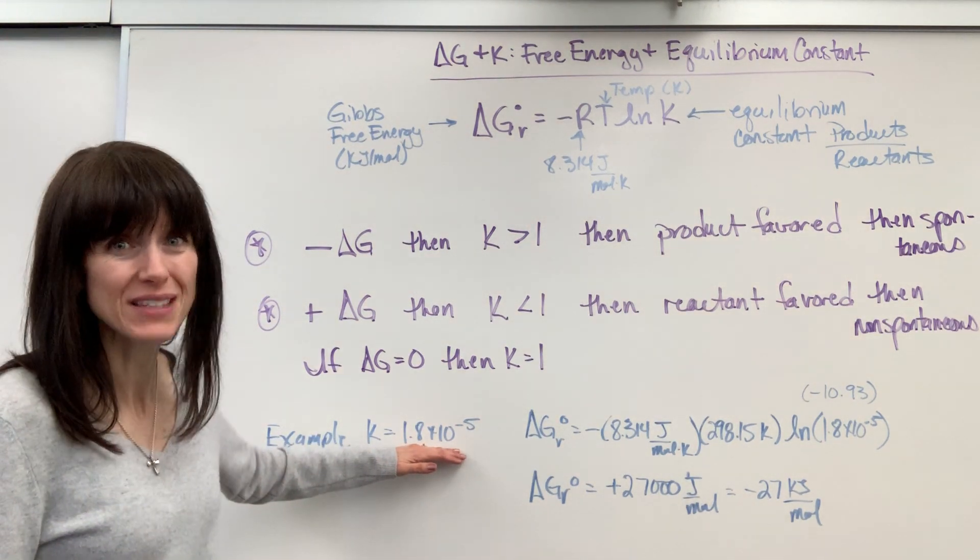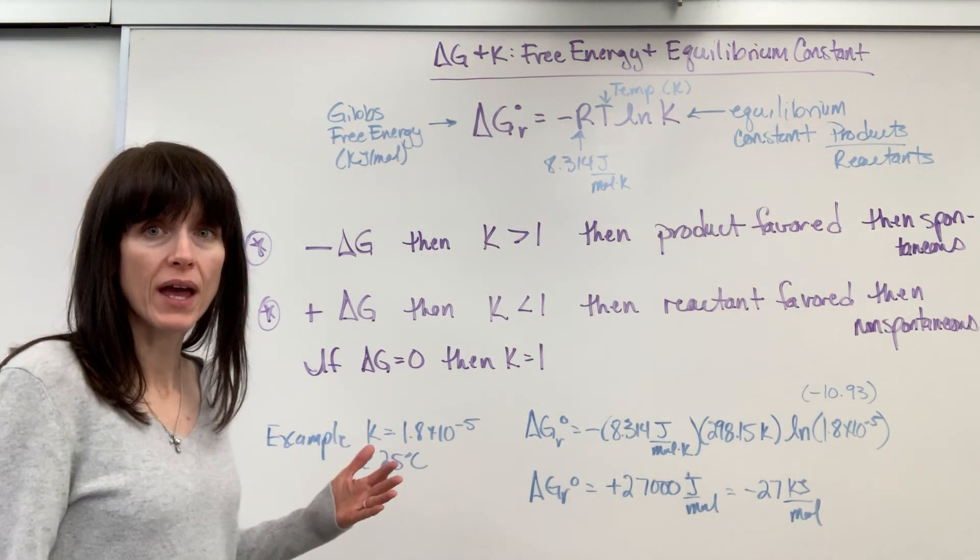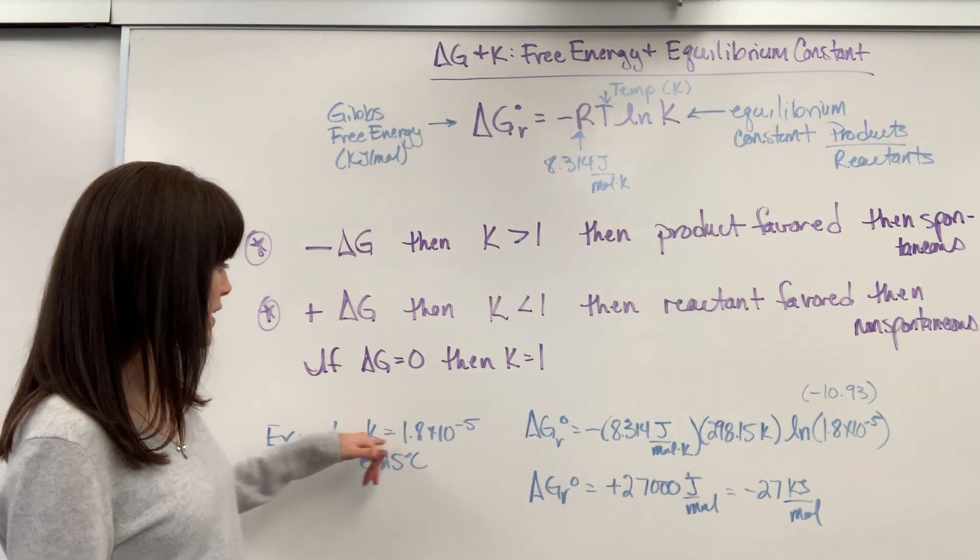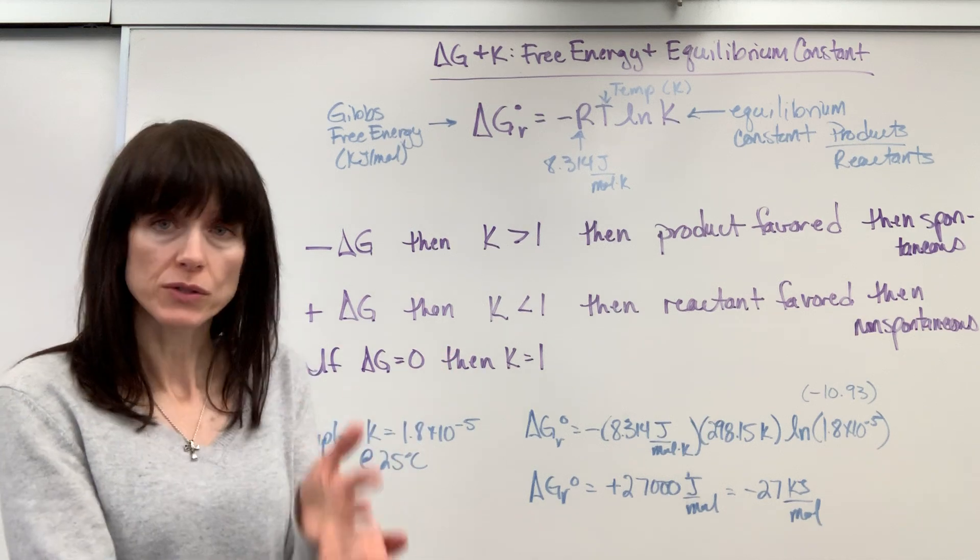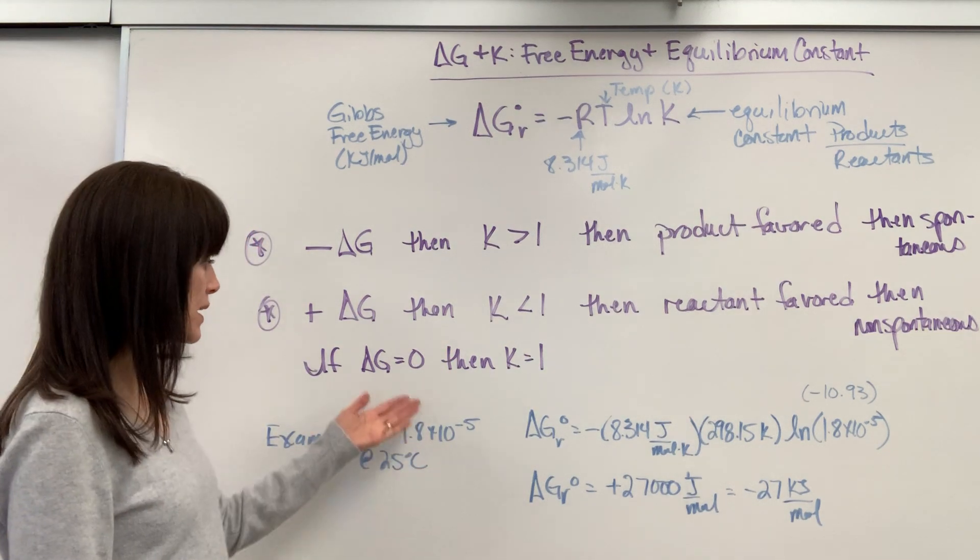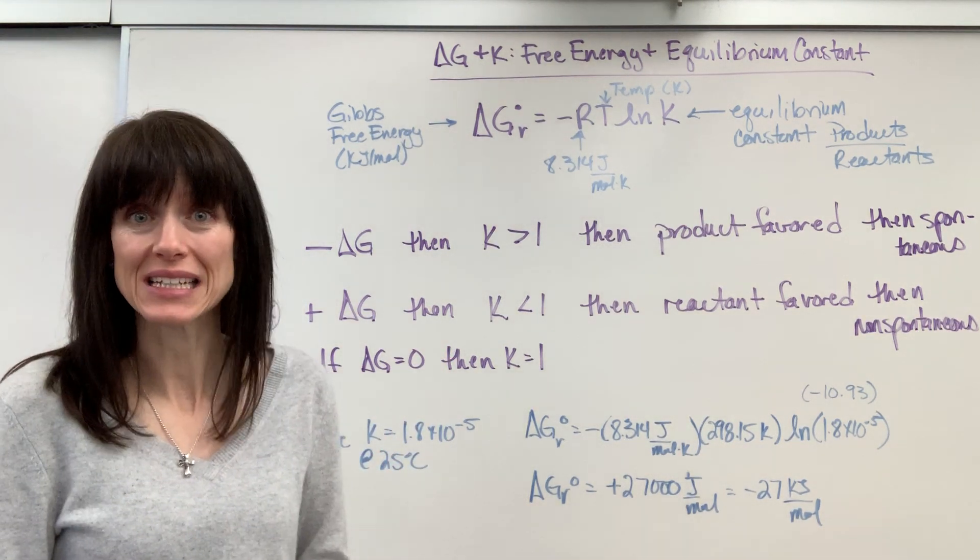less than 1, 10 to the minus 5, this is a small number. Right away, I can predict, well, if K is less than 1, I predict delta G is positive. I know it's going to be reactant favored, obviously, which means it's non-spontaneous.